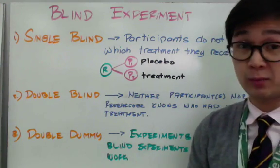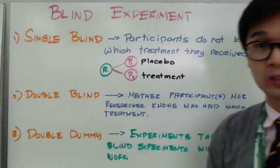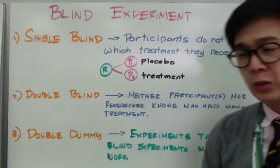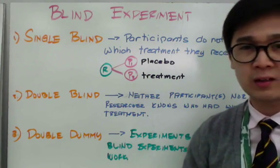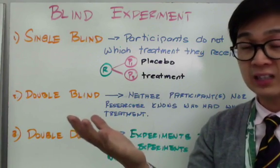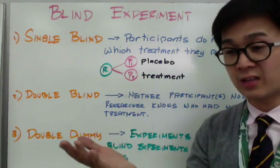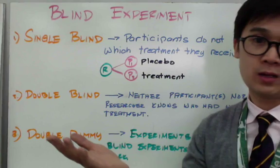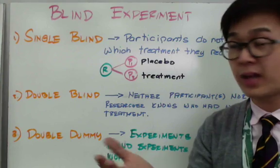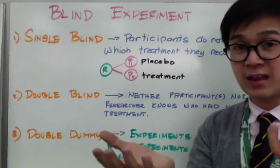The third type of blind experiment is the double dummy, which is used when a standard blind experiment won't work. For example, if you develop both a pill and a patch to relieve migraines, a regular blind experiment cannot be applied because you are using two independent products that each have an active ingredient. In that case, the double dummy design is used.